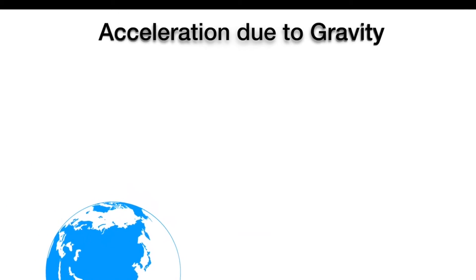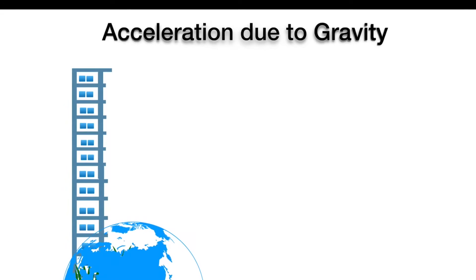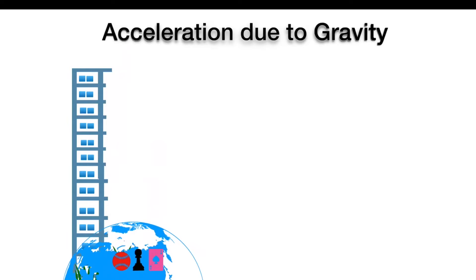This acceleration in an object's motion because of the Earth's gravitational force is known as acceleration due to gravity, and it is independent of the object's mass, shape, and size. This means if we drop two or three different objects from the same height, they will accelerate with the same acceleration, and this results in the objects reaching the ground at the same time.